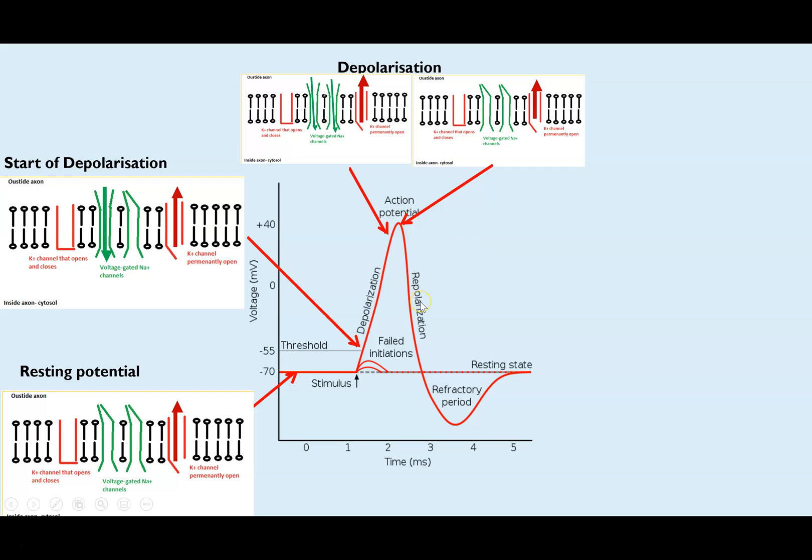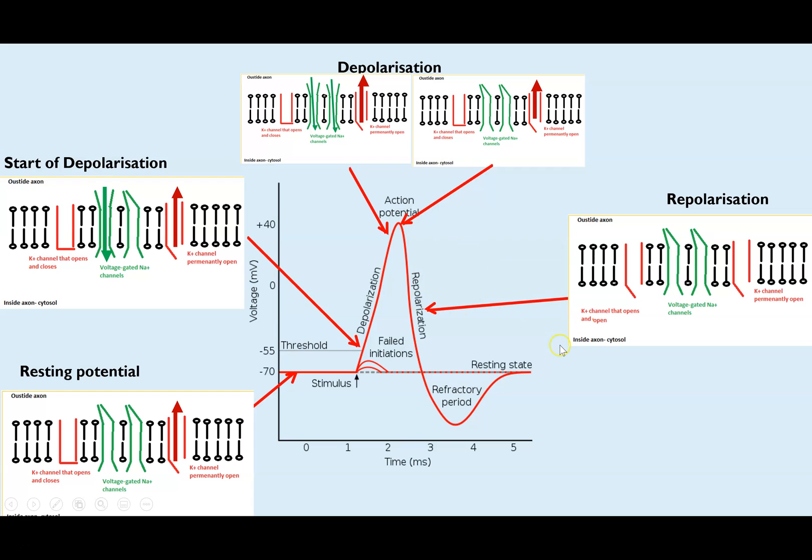And that's then the first start, first part of repolarization. So we then have potassium ion channels are opened at that particular voltage. So we end up with two channels open. So we have twice the amount of potassium ions now diffusing out, which causes this decrease in voltage.